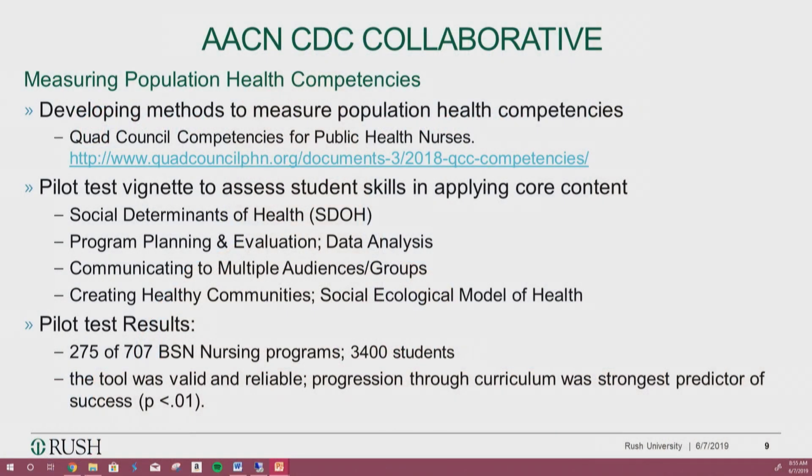We also tried to address the fact that the essentials are very broad and conceptual — Rush might teach population health one way, Loyola another way, with no measures guaranteeing students come out with a particular set of skills. We can't say all nurses, for example, can assess and address the social determinants of health the way we can say every nursing student can take a blood pressure. So we did work through AACN developing a small vignette to measure competencies in population health. We piloted it with 3,400 students across a large number of nursing programs and found the vignette was valid and reliable, and that progression through the curriculum correlated with how well students did on it. But it's a small vignette — we need much more work to establish consensus on what skills we want students to have and how to measure them.